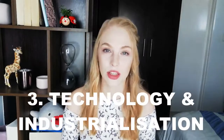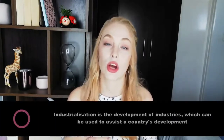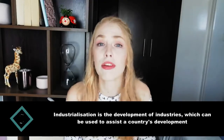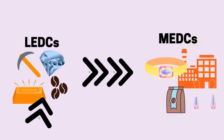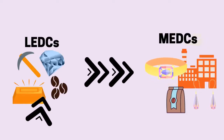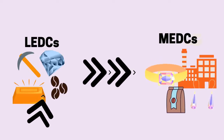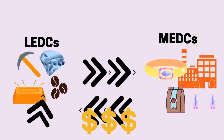The third factor of development is technology and industrialization. Industrialization is the process of using industry to help develop your country by manufacturing and processing goods. The general trend is that LEDCs export raw materials to MEDCs at a fairly low price. These MEDCs then use these raw materials to manufacture and produce goods, which are then sold back to LEDCs at a more expensive price. This happens because LEDCs have an abundance of raw materials, whereas MEDCs have invested in proper equipment and machinery and warehouses to actually manufacture these products.